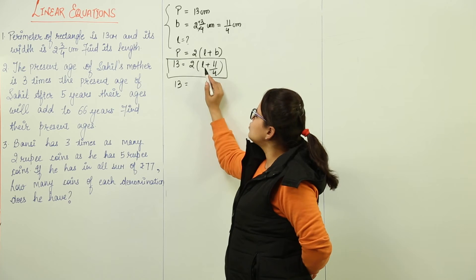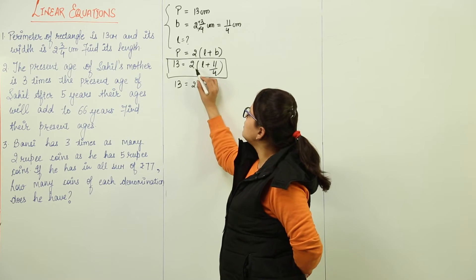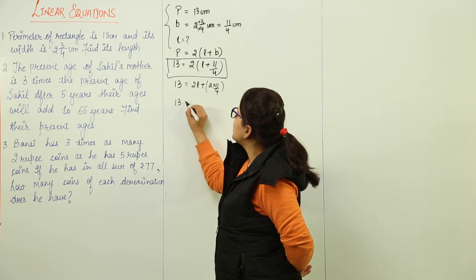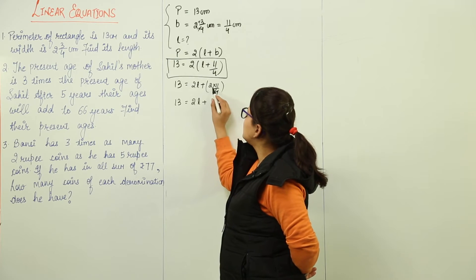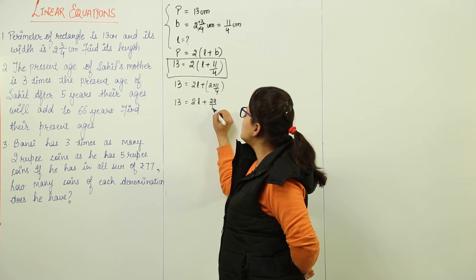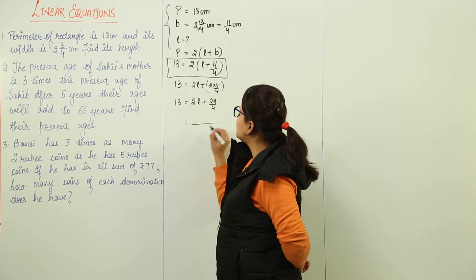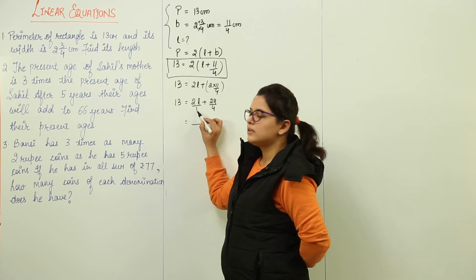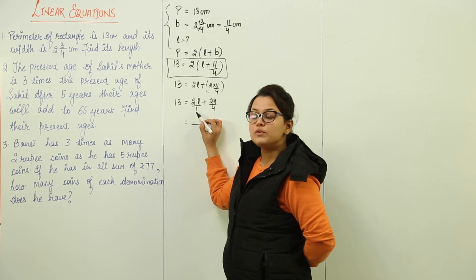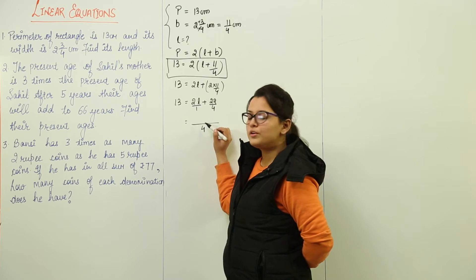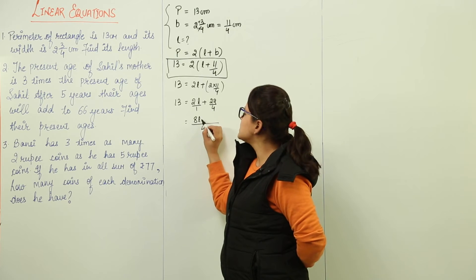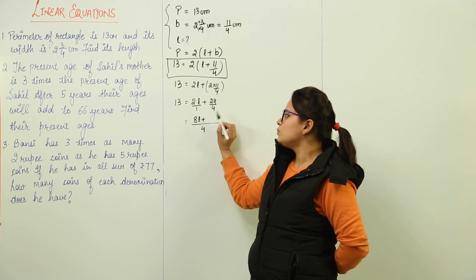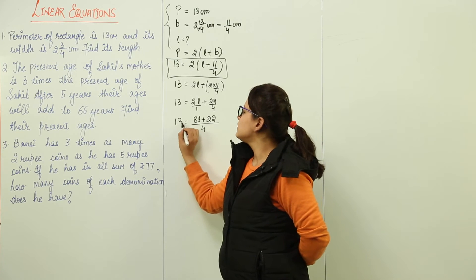We will multiply 2 with L, it becomes 2L. We will multiply 2 with 11 upon 4. Now what my equation comes? It becomes 2L plus 2 into 11 becomes 22 over 4. Further solving requires me to take out the LCM, that is 4. The 4 gets multiplied with 2L, it becomes 8L. So this is my equation now.